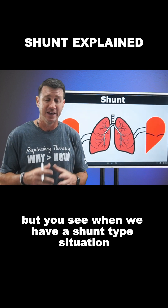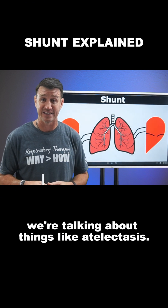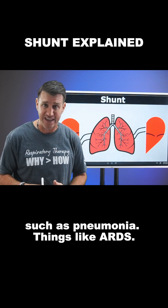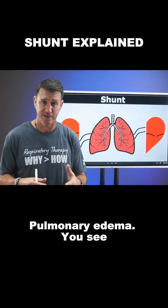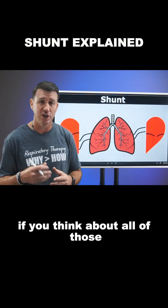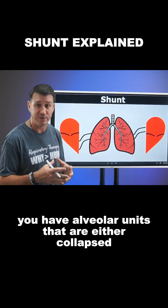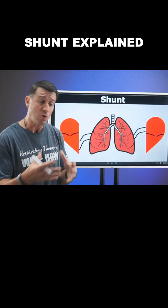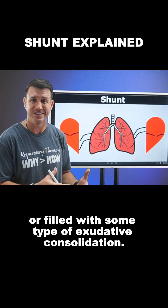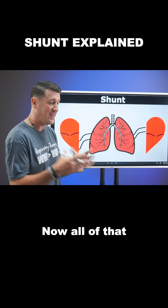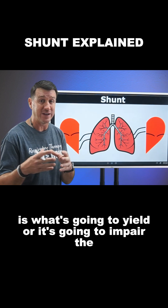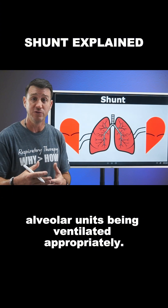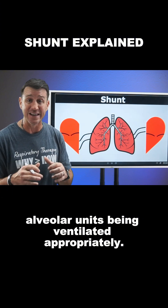When we have a shunt-type situation, we're talking about things like atelectasis, things like consolidation such as pneumonia, things like ARDS, pulmonary edema. If you think about all of those, you'll find you have alveolar units that are either collapsed or filled with fluid or filled with some type of exudative consolidation. All of that is what's going to impair the alveolar units from being ventilated appropriately.